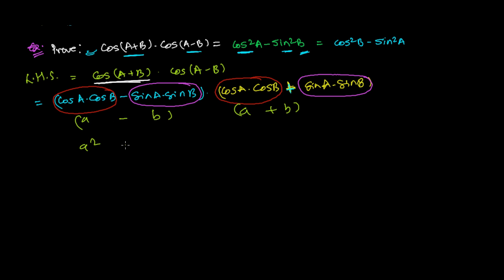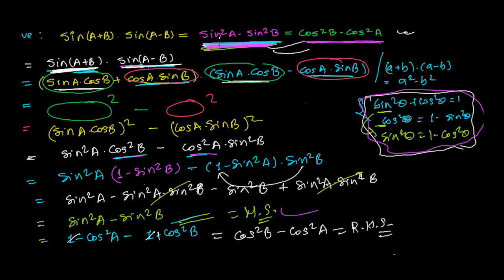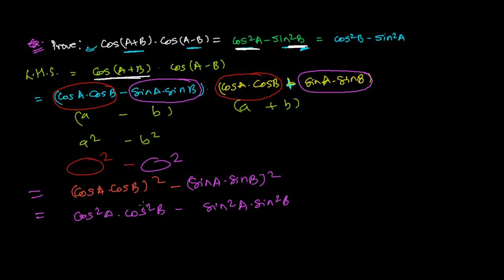Using the same idea, we square the red term and subtract the square of the pink term. So this becomes: (cosA·cosB)² minus (sinA·sinB)², which expands to cos²A·cos²B minus sin²A·sin²B. Now we need the first term in cosine form and the second term in sine form, so we'll convert accordingly.